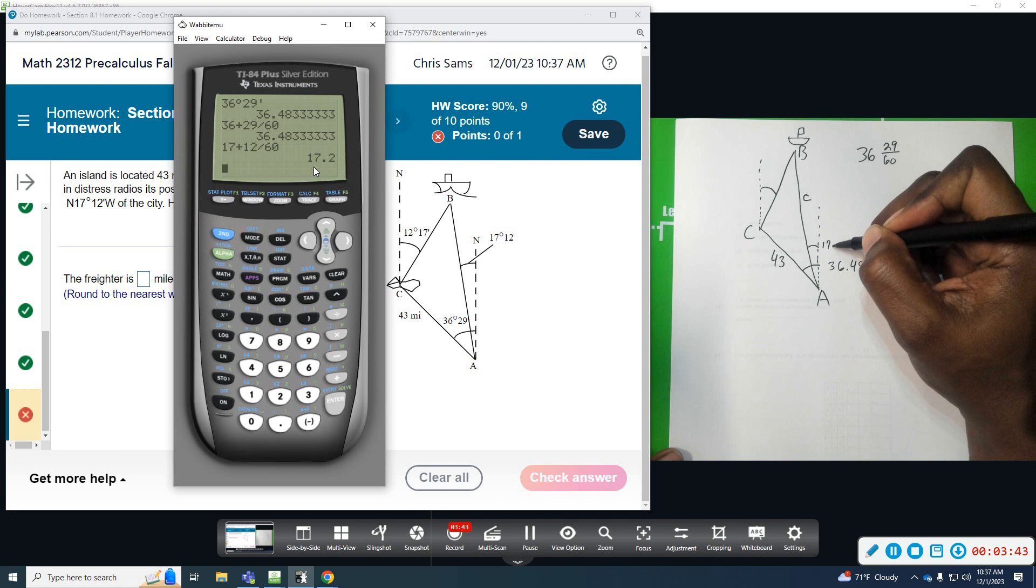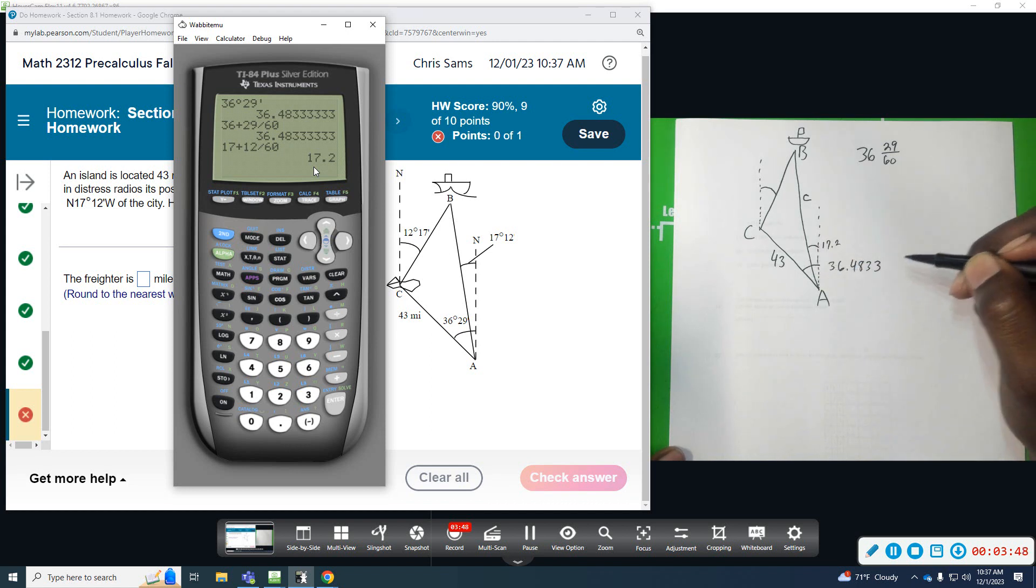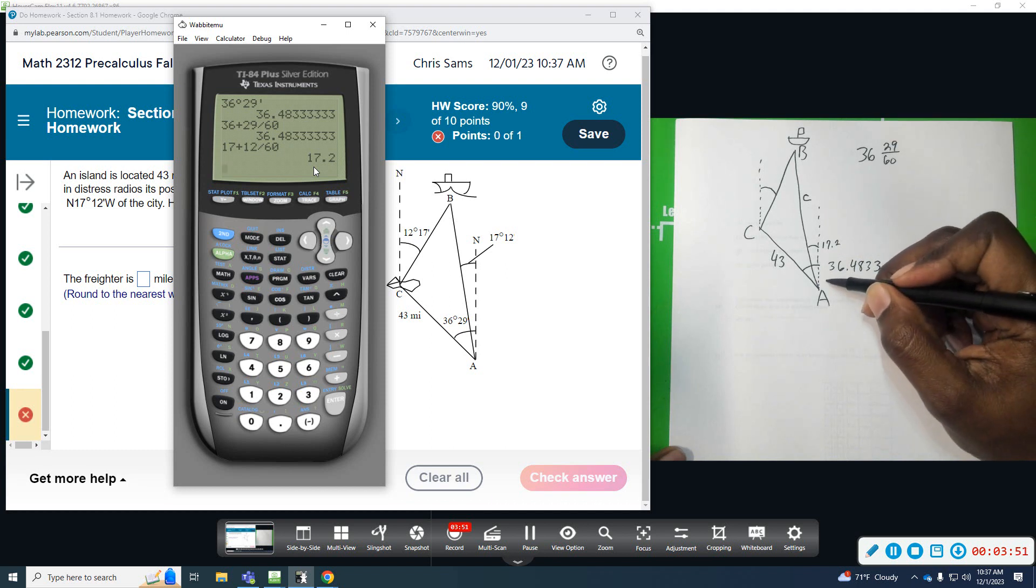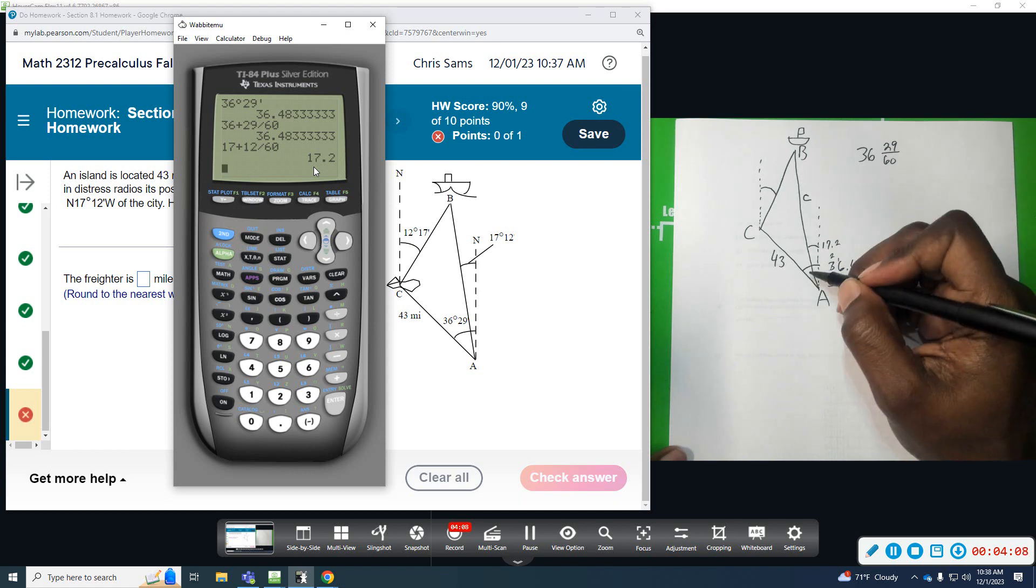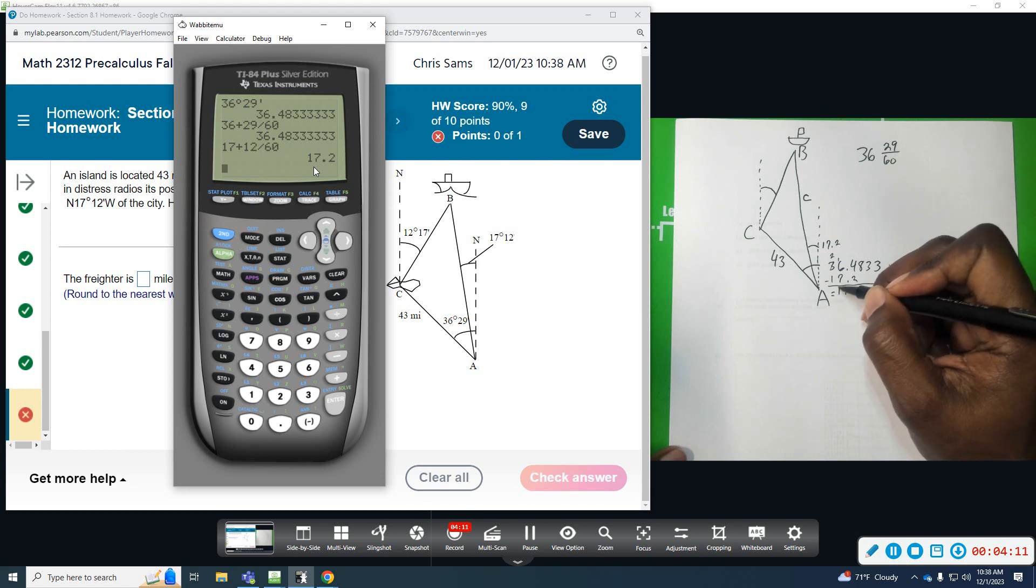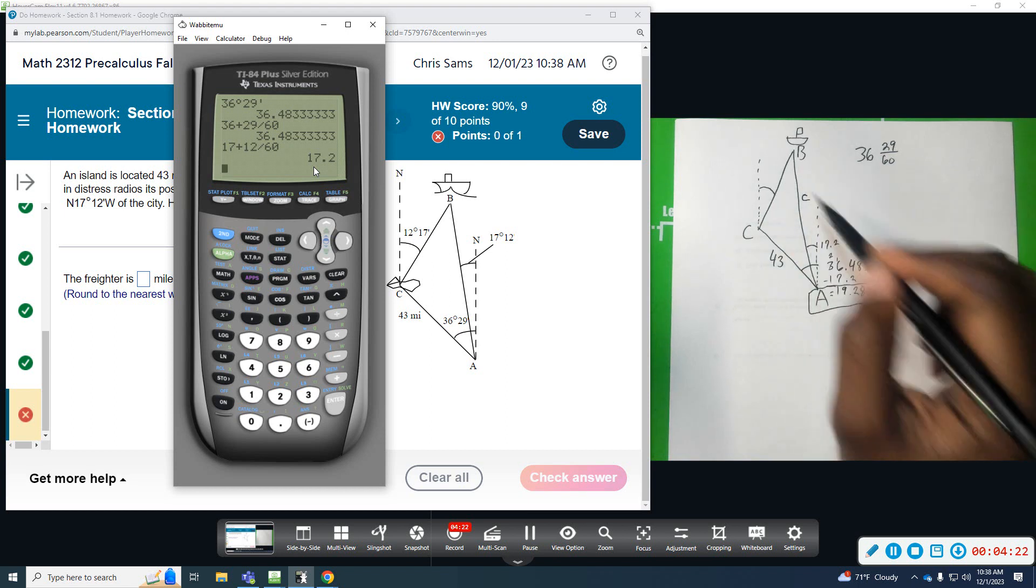So, this angle is 17.2. Now, I can subtract these two, and that will give me angle A. If I subtract 17.2, I have to borrow 1, and that will give us 19. So, angle A is 19.2833. Now, I don't need angle A to solve the problem, but I need to use angle A to figure out the others.